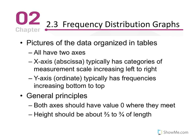Chapter 2 continued. This is part 3, frequency distribution graphs. We're going to take our data and instead of constructing a table, we're going to present it in a visual graph for consumers of our research to understand patterns in the raw data. So pictures of the data organized in tables all have two axes. The x-axis is referred to as the abscissa, typically has categories of measurement scale increasing from left to right.